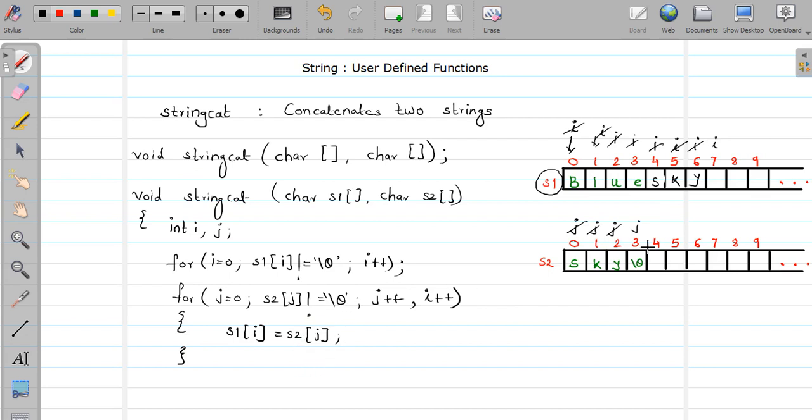If you observe, your first string is no longer a string. It is just an array of characters because there is no null character at the end of the string. But if you observe, your i is already at the next position, at the seventh position. What we can do is explicitly add a null character at the ith position of your first string. Don't forget this part, otherwise s1 will no longer be a string. Here, a null character will be added, and our function also completes.